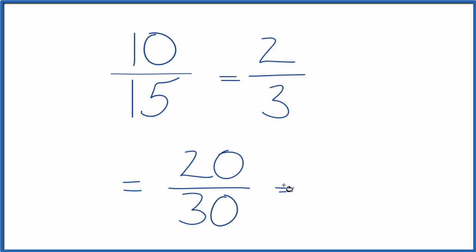Let's do one more. Let's multiply the numerator and denominator by 3. 10 by 3 is 30, 15 times 3, that's 45, and 30 over 45, that's another equivalent fraction for 10 fifteenths.